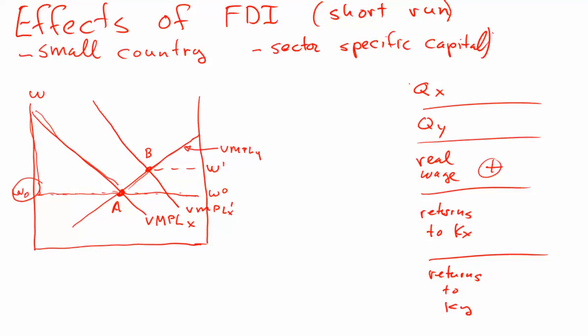This comes about for a couple of different reasons. First, labor is going to be drawn into the X sector because of the expansion of capital in that sector. The wage is going to tend to rise, and that's going to draw labor out of the Y sector. As the capital owners in this economy compete for the given labor stock, that's going to tend to bid the wage up.